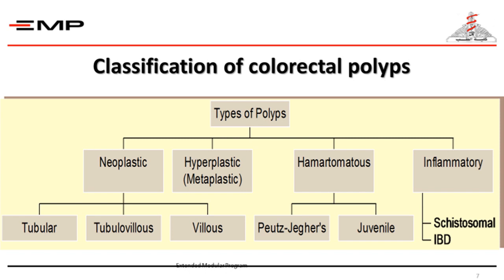The last group of polyps are inflammatory polyps, found in schistosomal polyposis — patients with schistosomal colitis in some stages develop inflammatory polyps. This is rare nowadays. The commonest inflammatory polyps are those seen with inflammatory bowel diseases like Crohn's disease and ulcerative colitis, called pseudopolyps. They are formed by regeneration of mucosa after ulceration — the healthy mucosa between ulcers regenerates and these are not true polyps.